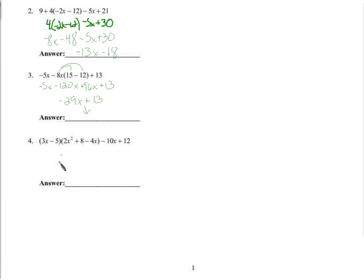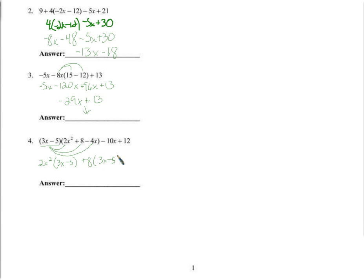I'll put that right there on my answer line. Now let's multiply these together — I'm going to do it the long way for anybody who likes to see that. I'll distribute just like any other distribution in the last three problems. Instead of distributing a negative 8x or a 4, I'm going to distribute this entire parentheses, 3x minus 5. So I'll wind up with 2x² times (3x minus 5), plus 8 times (3x minus 5), minus 4x times (3x minus 5), minus 10x plus 12.